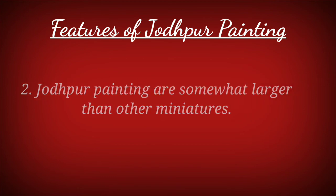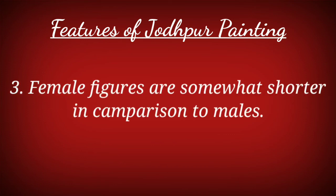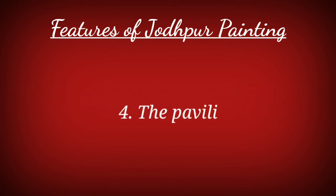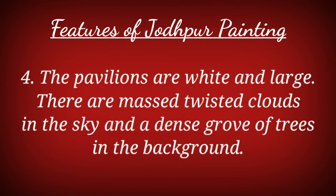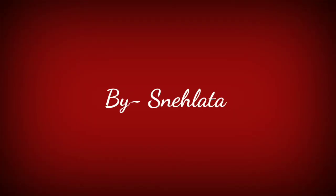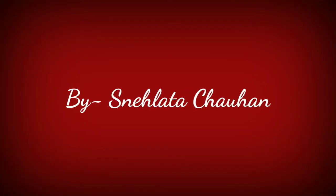Second, Jodhpur paintings are somewhat larger than other miniatures. Third, female figures are somewhat shorter in comparison to males. Fourth, the pavilions are white and large. There are masked twisted clouds in the sky and a dense grove of trees in the background.